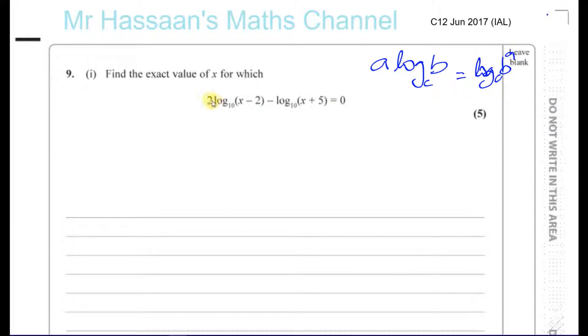So that 2 becomes a power here. So before we can combine these, we've got to express it in this way. So you're going to have (x minus 2) squared minus log to the base 10 of (x plus 5) equals 0. As I said, we don't really have to write the 10, but I'm going to write it as they did.